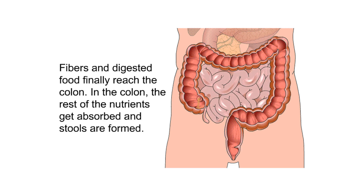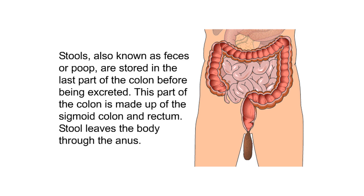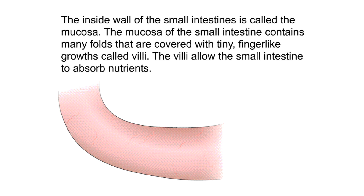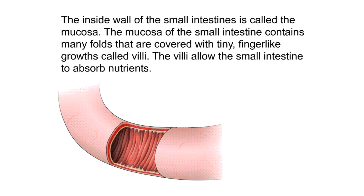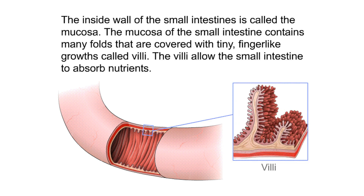Fibers and digested food finally reach the colon, where the rest of the nutrients get absorbed and stools are formed. Stools, also known as feces or poop, are stored in the sigmoid colon and rectum before being excreted through the anus. The inside wall of the small intestine is called the mucosa, which contains many folds covered with tiny finger-like growths called villi. The villi allow the small intestine to absorb nutrients.